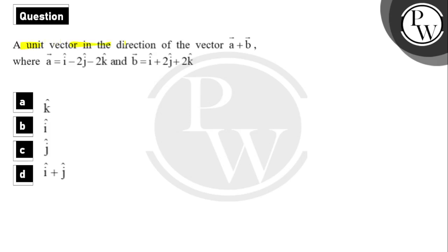Hello, let's see the question. The question is: find a unit vector in the direction of the vector a plus vector b, where vector a is i-cap minus 2j-cap minus 2k-cap and vector b is i-cap plus 2j-cap plus 2k-cap. Four options are given.